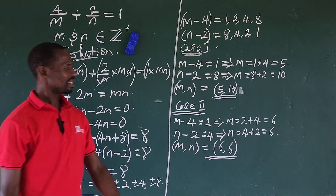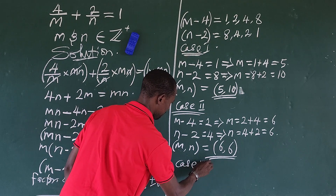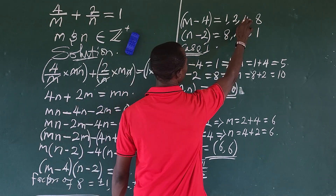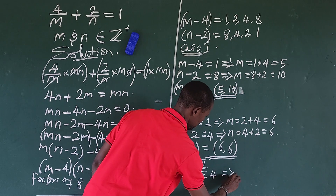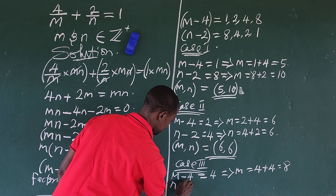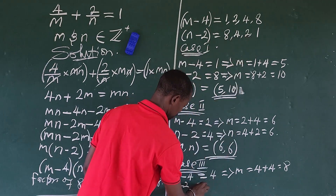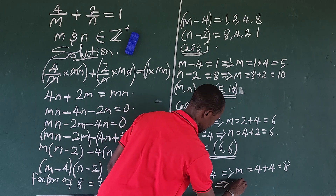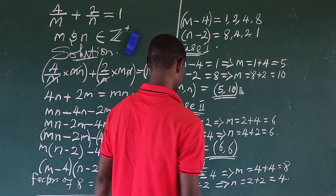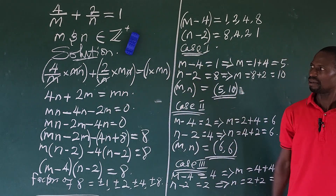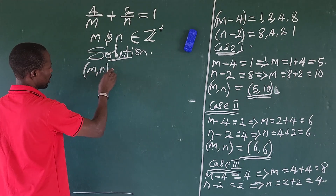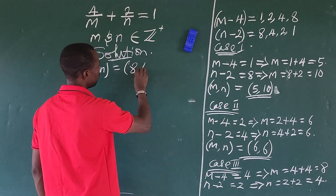Case 3: m minus 4 equals 4, so m equals 4 plus 4 which is 8. And n minus 2 equals 2, so n equals 2 plus 2 which is 4. The third solution pair from Case 3 is (m, n) = (8, 4).